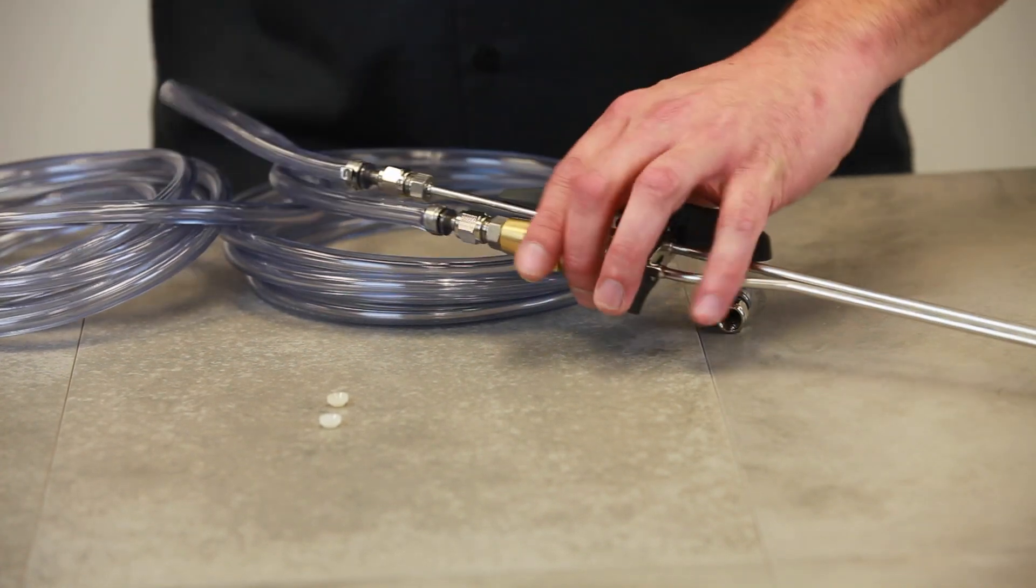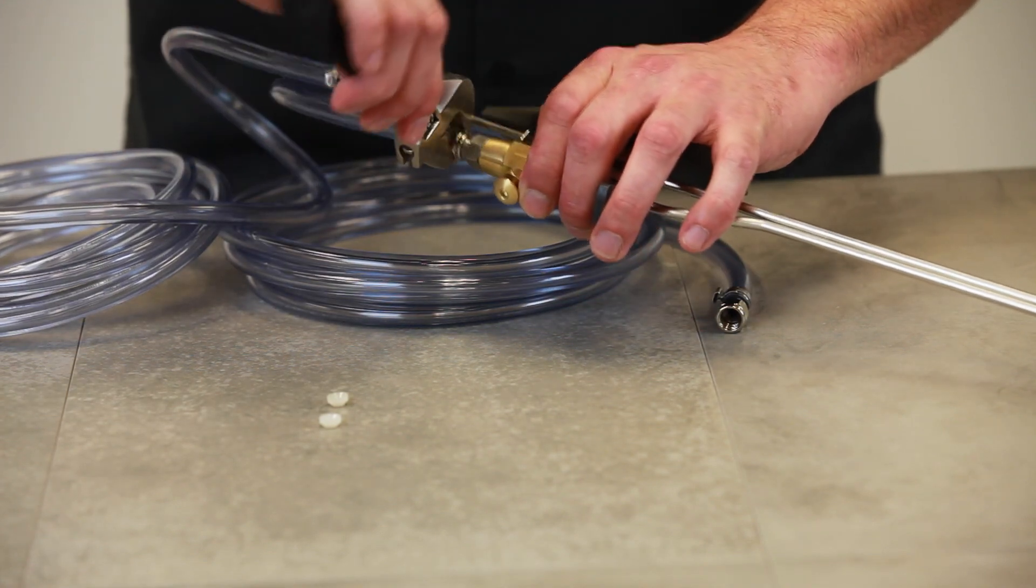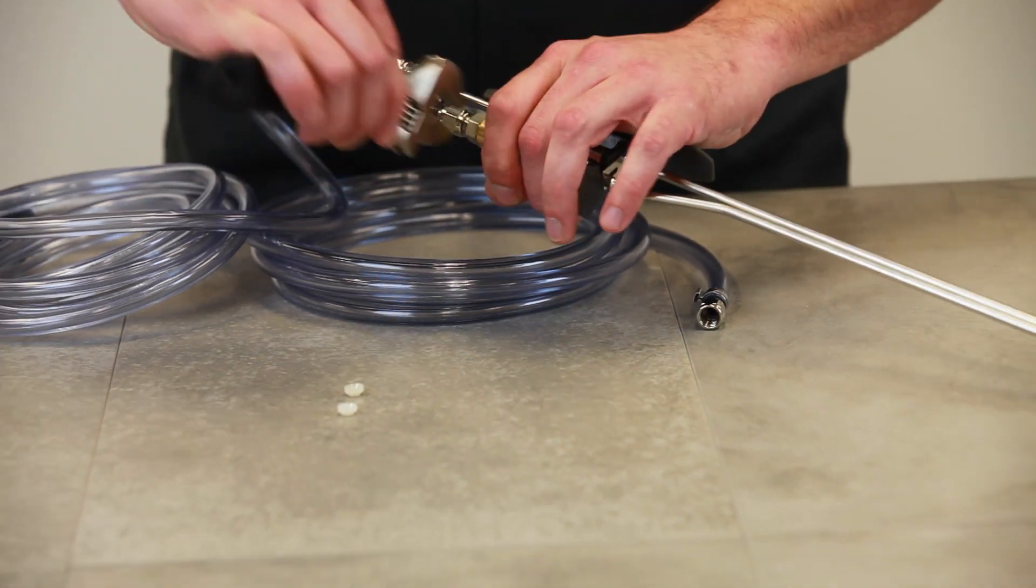Once we have these finger tight, gently snug them tight with a wrench. Don't over tighten it or you can damage your Last Straw filler.